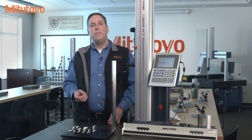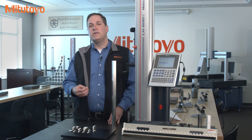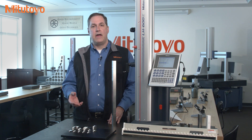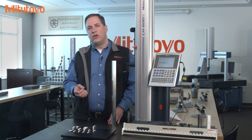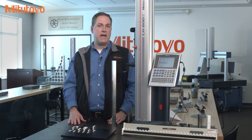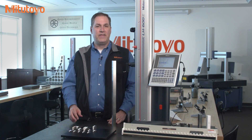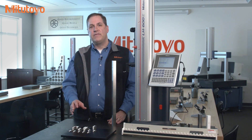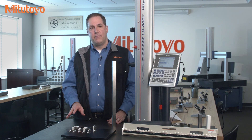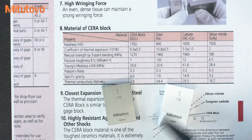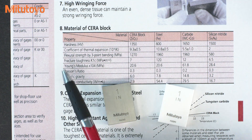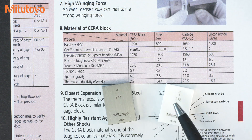All materials expand as temperature increases, and different materials expand by different amounts. You need to know what's called the coefficient of thermal expansion, or the CTE, of different materials to understand the impact. If you look in the Mitutoyo catalog, you will see the published CTE for our gauge blocks.